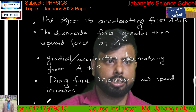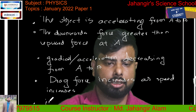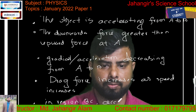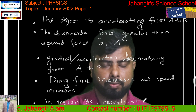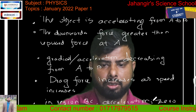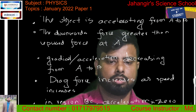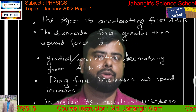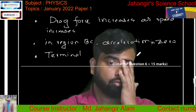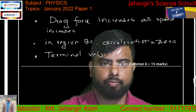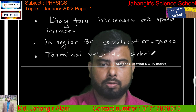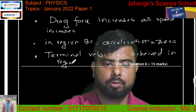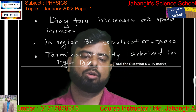In region BC, the acceleration is zero. Terminal velocity is achieved in region BC. When the drag force equals the weight force, there is no net force, so acceleration becomes zero and the object moves at a constant terminal velocity.